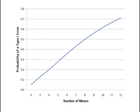This graph shows the number of possible comparisons between pairs of means as a function of the number of means. If there are only two means, then only one comparison can be made. But if there are 12 means, then there are 66 possible comparisons.